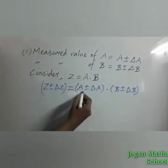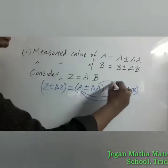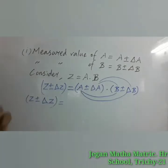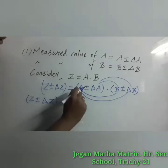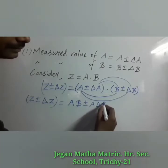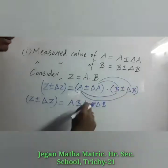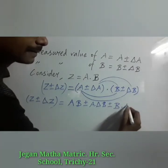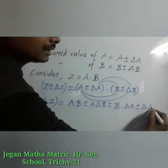We can perform the normal multiplication of (A ± del A) into (B ± del B), expanding to get: A·B ± A·del B ± del A·B ± del A·del B.